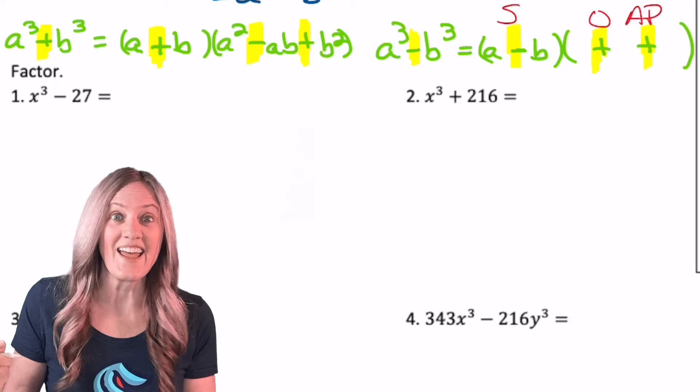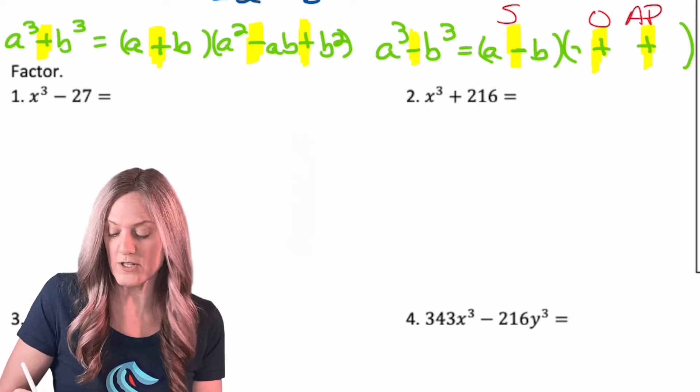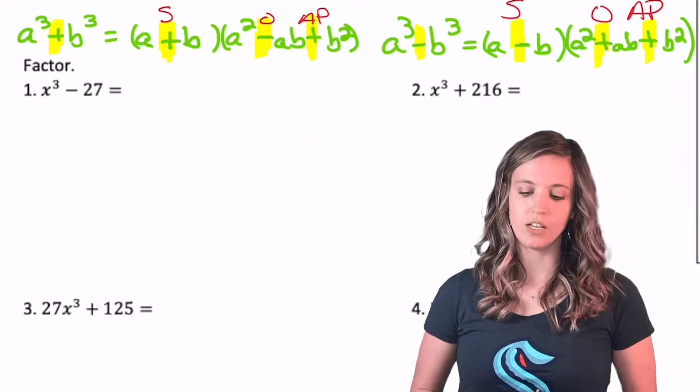Same on a cubed minus b cubed, right? First, a, and then last, b. And how do I get the trinomial? First squared, multiply together, last squared.